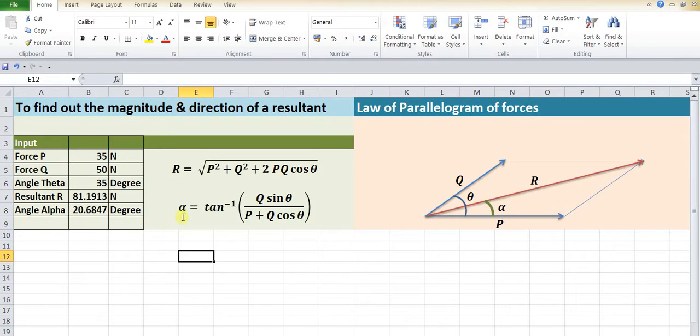This formula R equals square root of P squared plus Q squared plus 2PQ cos theta is incorporated over here in this particular set. So this square root of P squared, plus the second term represents Q squared, plus 2PQ cos theta.